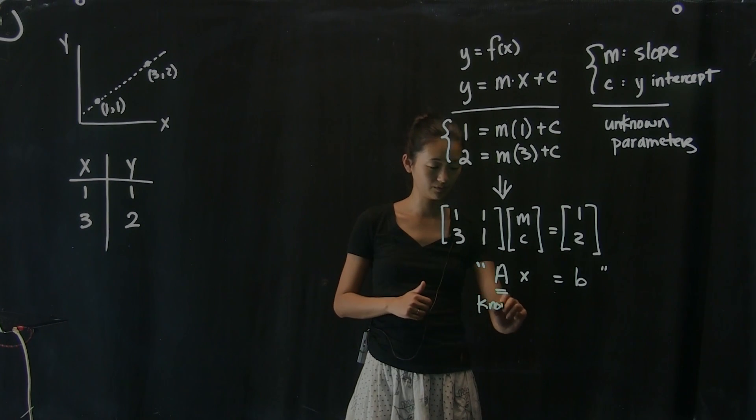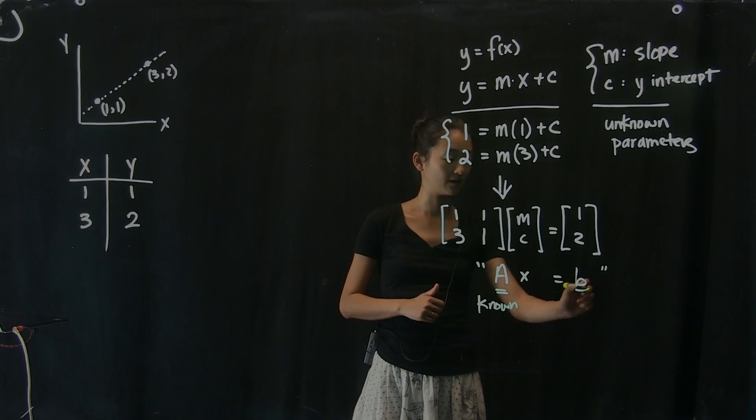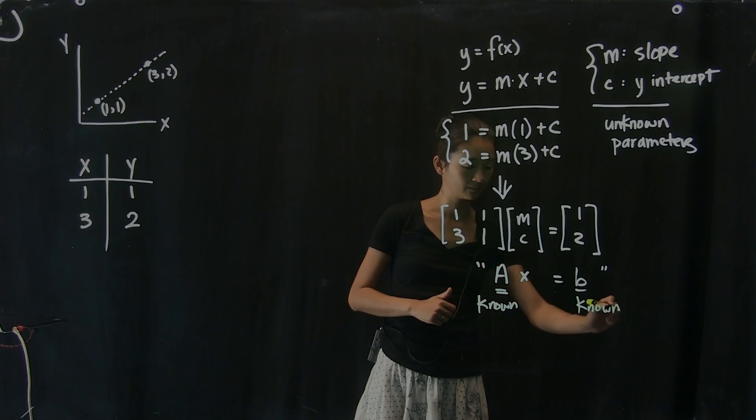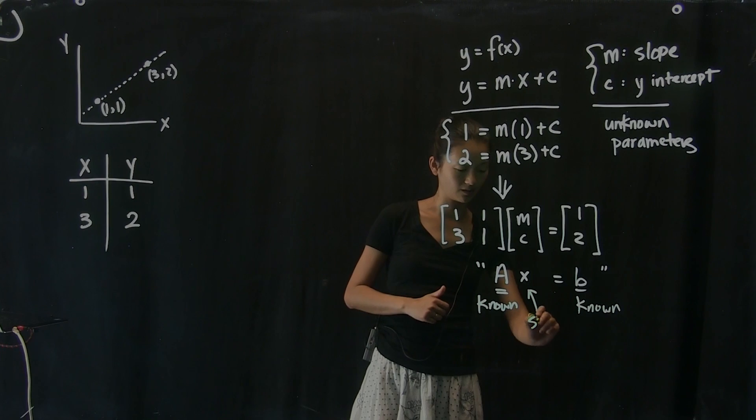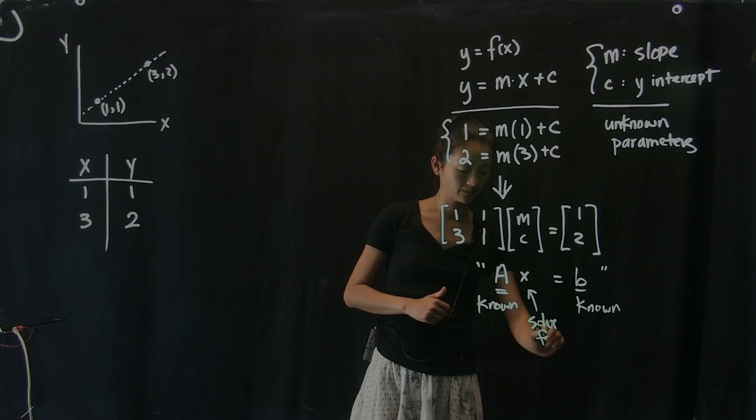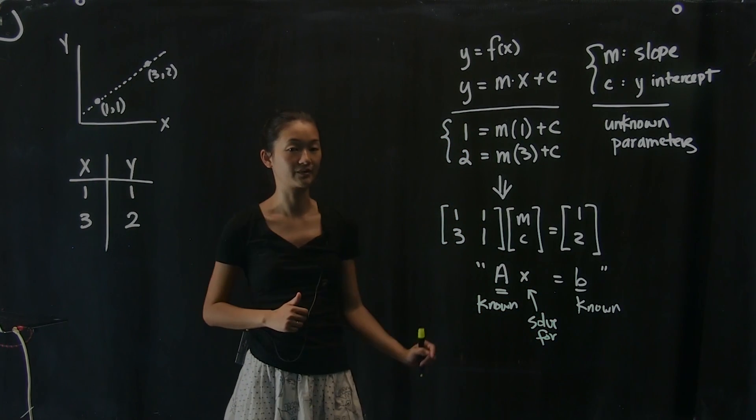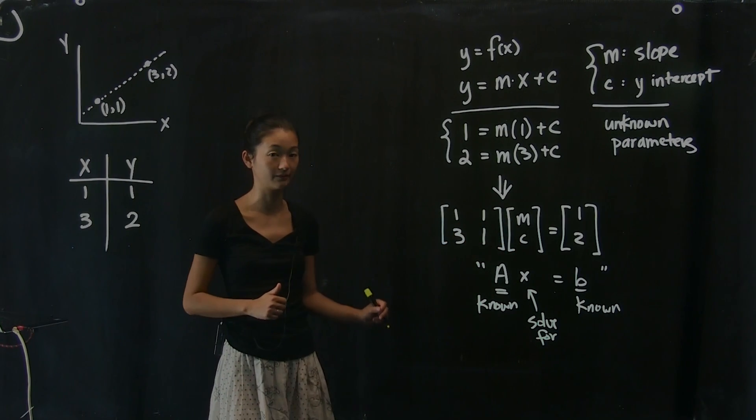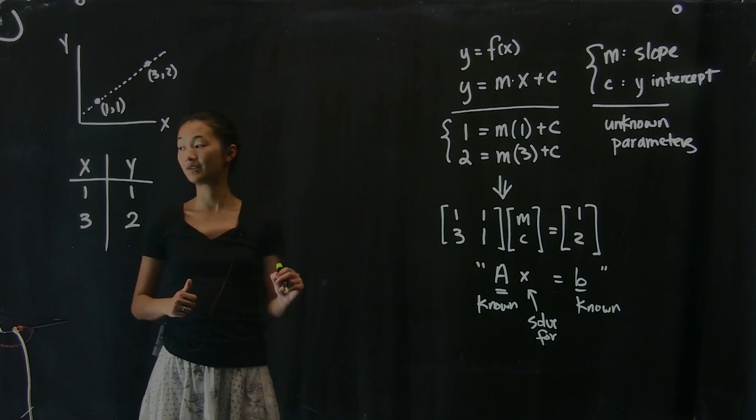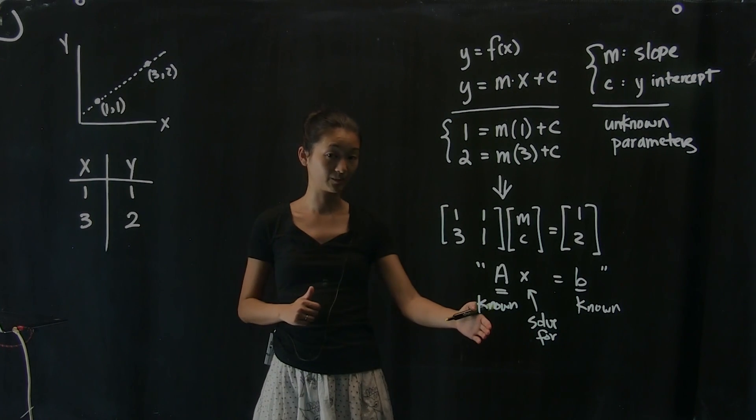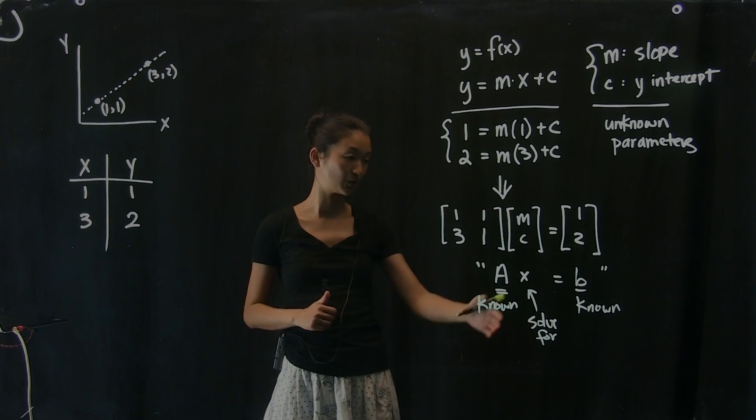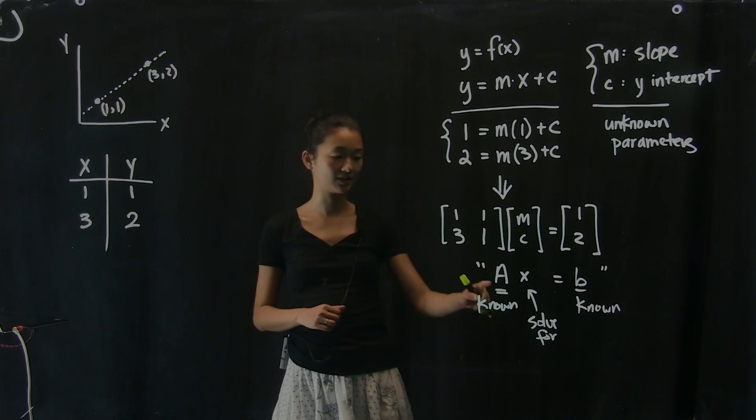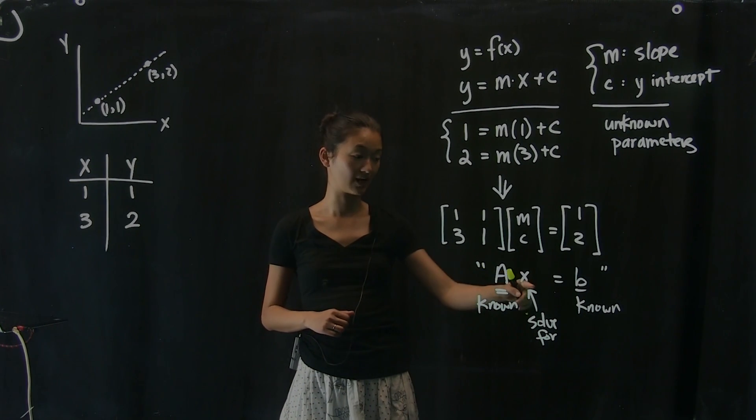So what we have is a matrix A, which is known. We have a vector b, which is also known. And what we want is to solve for this vector x over here, which in this case represents our vector of parameters. And so we all, if you remember from last time, the way to solve this equation, once we've set it up in this general way, is by taking the matrix inverse of A and using that to solve for x.